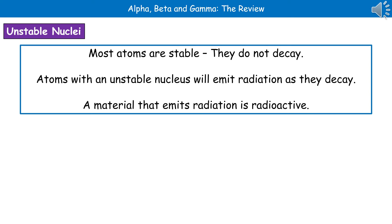Welcome to our review on alpha, beta and gamma. The first thing we need to know is that when we're talking about atoms, the vast majority of them are stable, and a stable atom will not undergo decay. However, there are a smaller number of atoms that are described as being unstable. This means they've got an unstable nucleus that will undergo the process of decay and will emit radiation as it does so. Any material that emits radiation is known as radioactive.